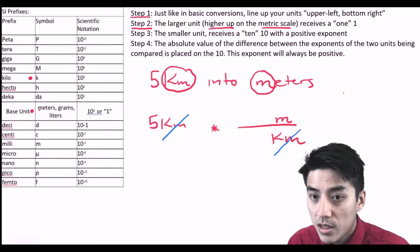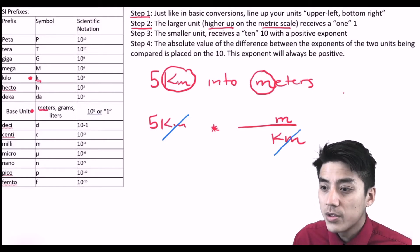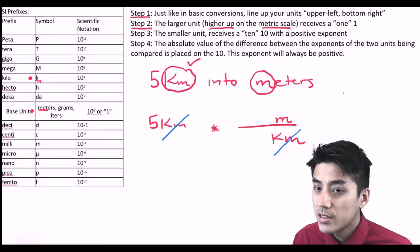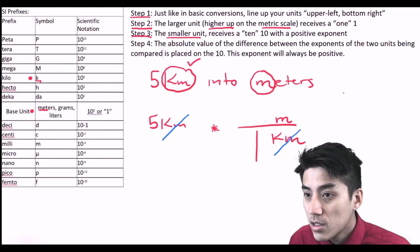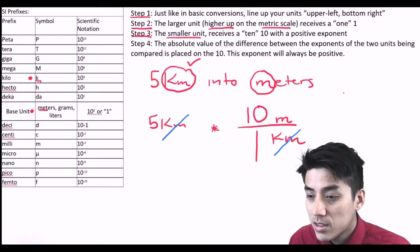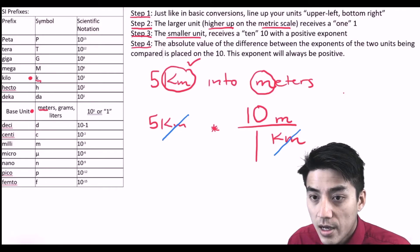I'm going to look at my prefix chart. I'm comparing kilo and the base unit. I just ask myself, which one's higher up on the chart? It's easy. If you just glance at it, it's kilo. Kilo's higher up on the chart. Kilo, give him the 1. The smaller unit always receives the 10. So put a 10 next to meters, just like that.